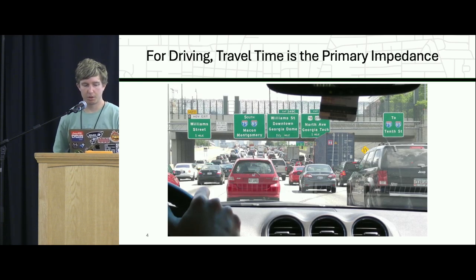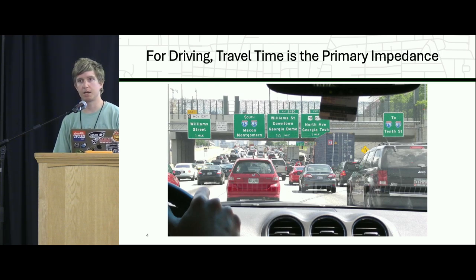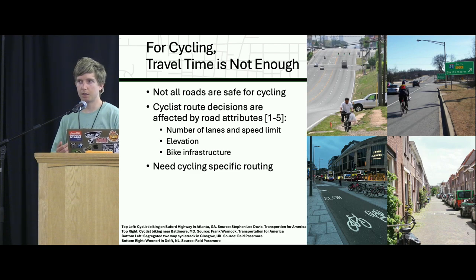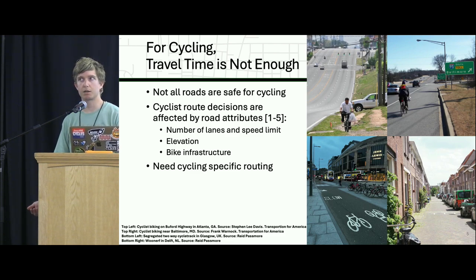If you've ever driven, you probably know what the primary impedance a driving routing algorithm would use — it's travel time. That's relatively straightforward, though it has some complications when you have to consider congestion. But for cycling, travel time is not really a good measure, and often that's because the most direct route is not the safest.